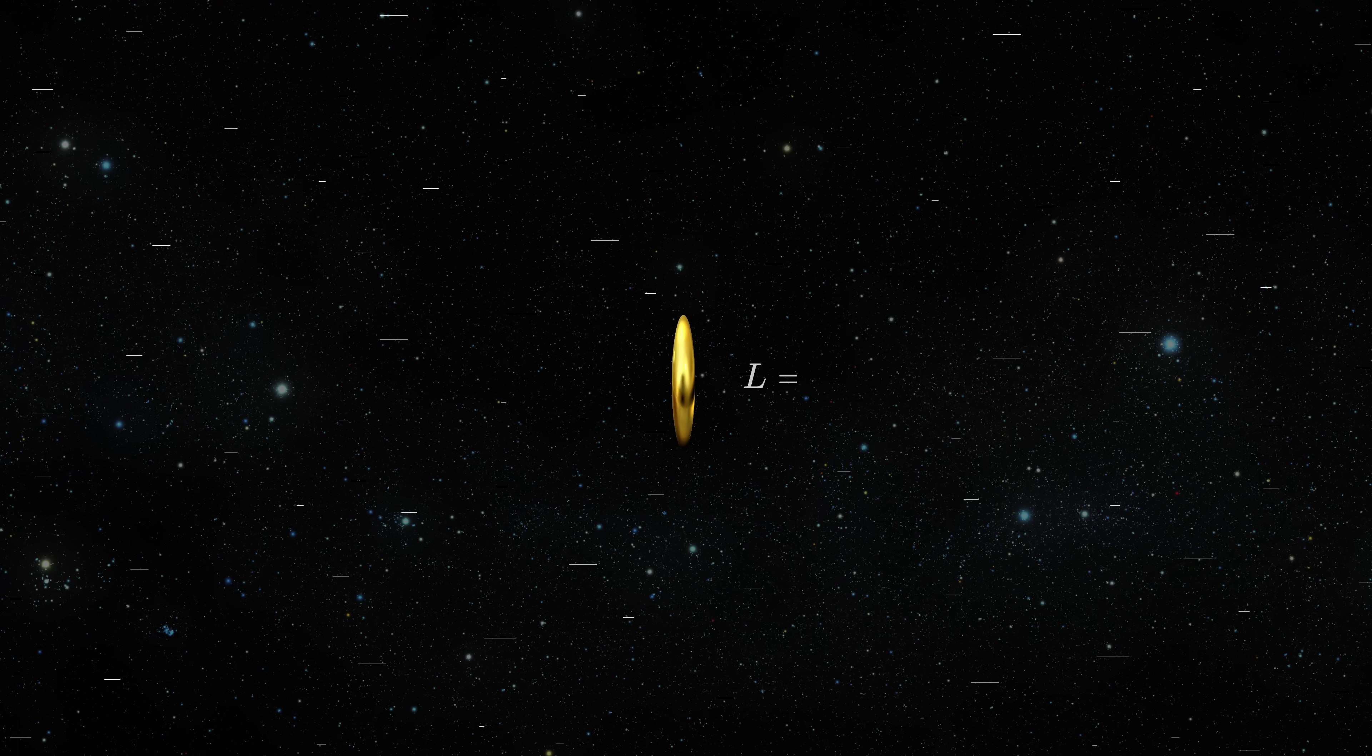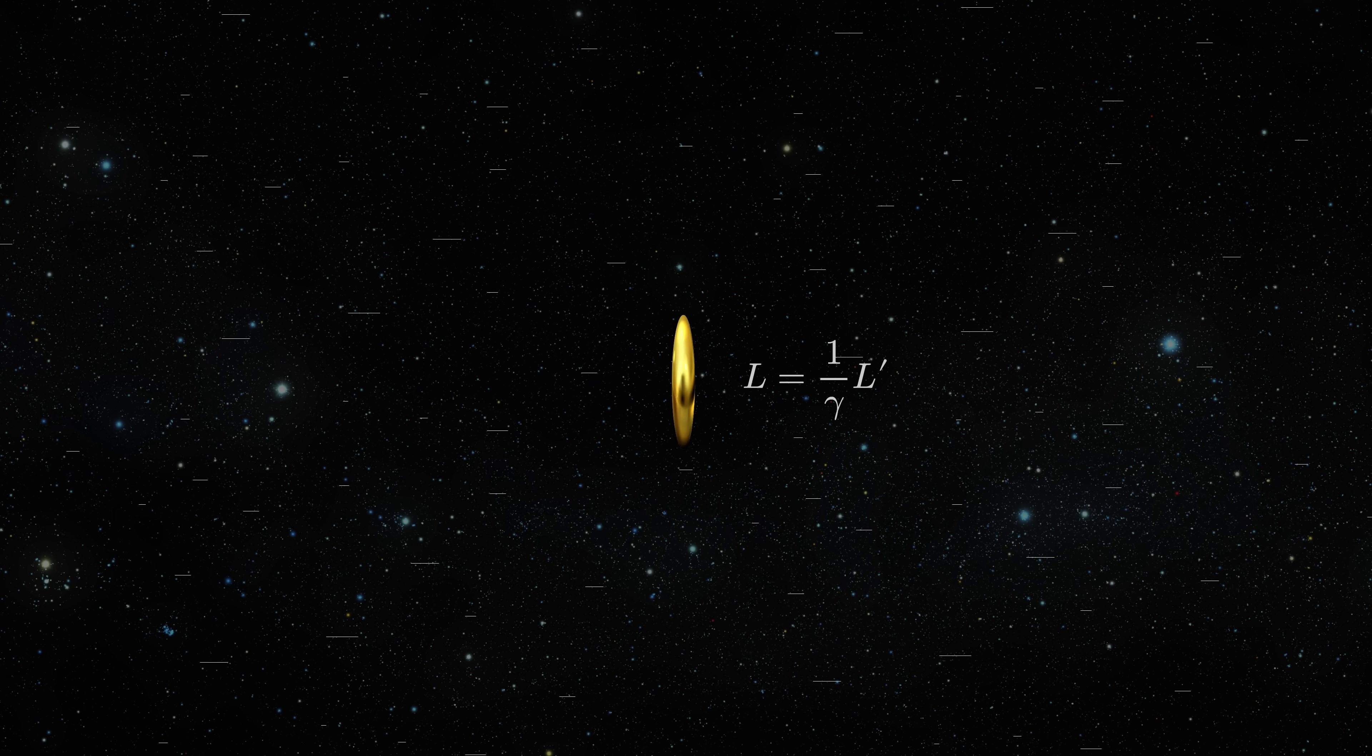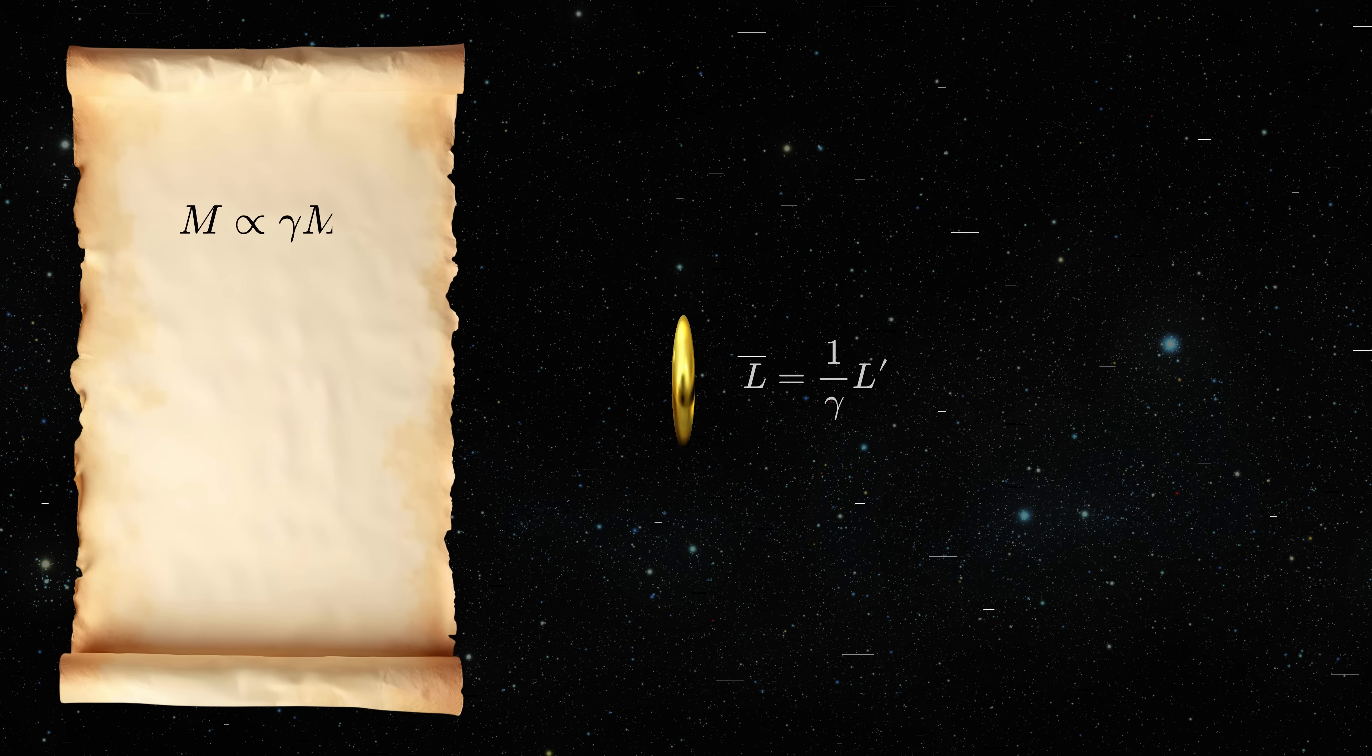But this is just a naive calculation. Because special relativity also teaches us that things in motion contract due to Lorentz's contraction. This adds another gamma factor into the game. So while mass increases linearly with gamma, the density of the ball increases with gamma squared.